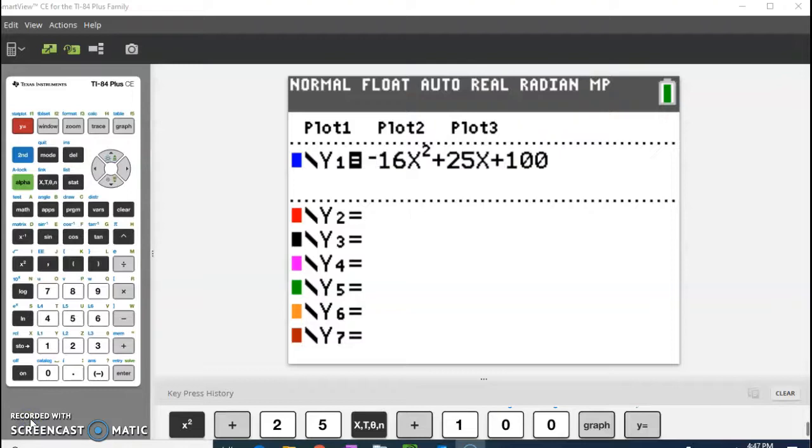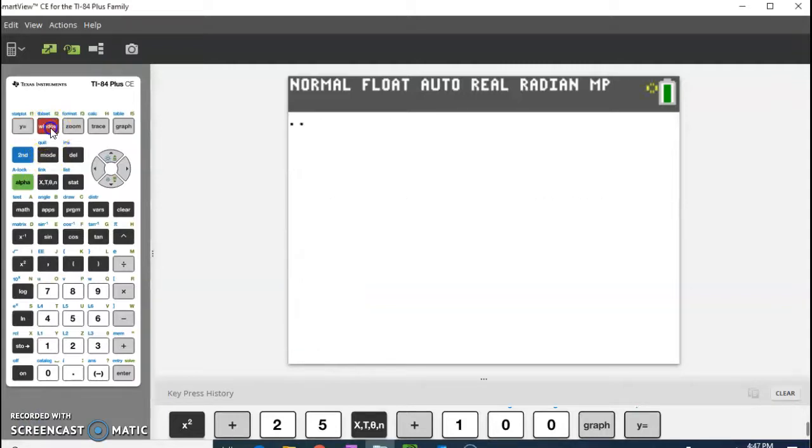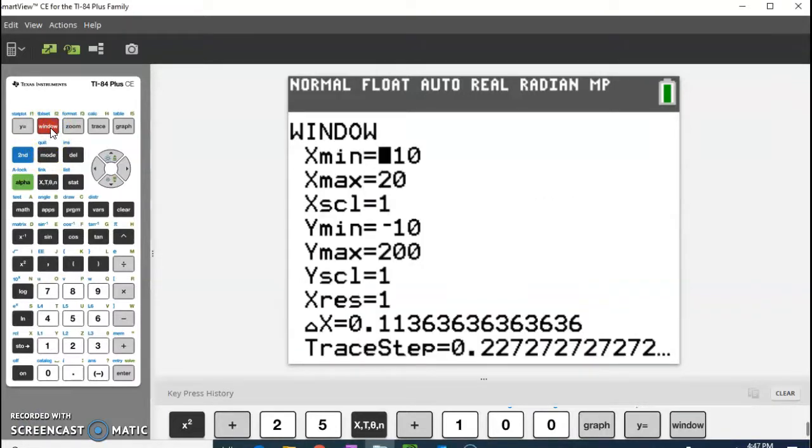Okay, so I've gone ahead and put my quadratic into y equals. And my window is set from my earlier problem. I don't know if this is going to be a good window, but I'm just going to hit graph and see how I need to adjust it if I need to adjust it.